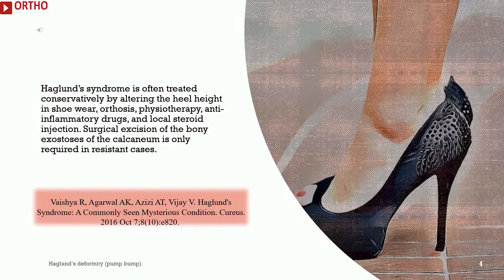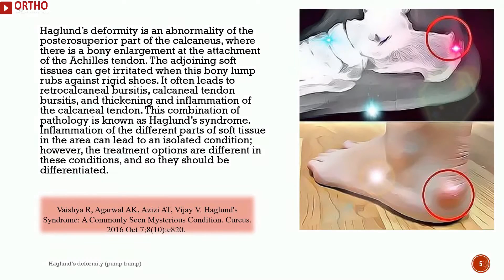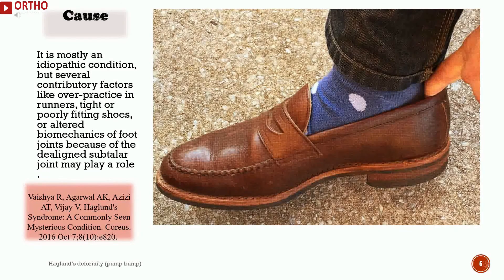Surgical excision of the bony exostosis of the calcaneum is only required in resistant cases. Haglund's deformity is an abnormality of the posterior superior part of the calcaneus, where there is a bony enlargement at the attachment of the Achilles tendon. The adjoining soft tissues can get irritated when this bony lump rubs against rigid shoes. It often leads to retrocalcaneal bursitis, calcaneal tendon bursitis, and thickening and inflammation of the calcaneal tendon. This combination of pathology is known as Haglund's Syndrome.